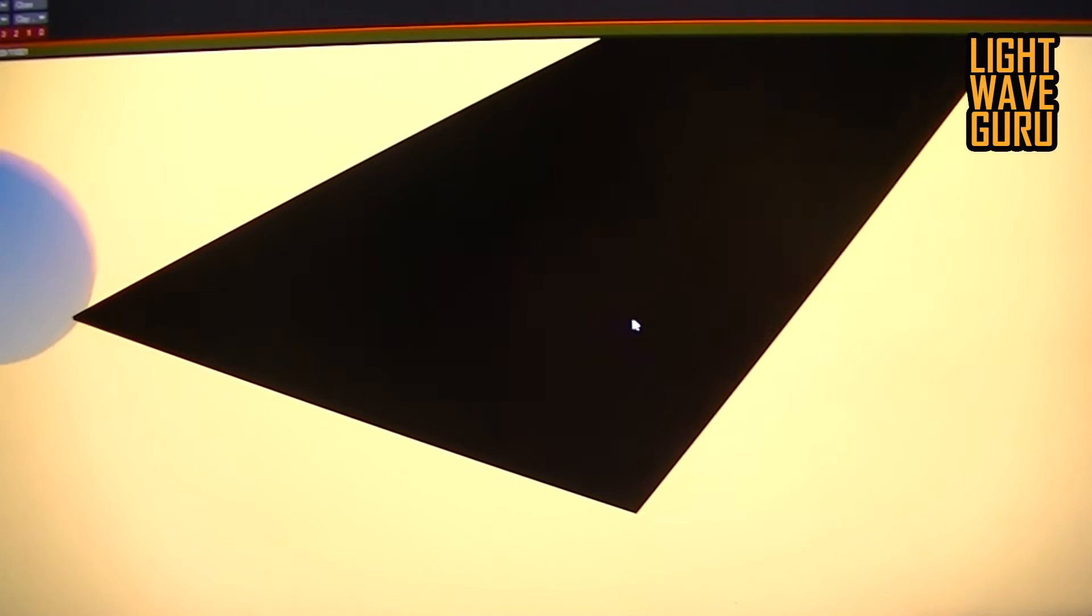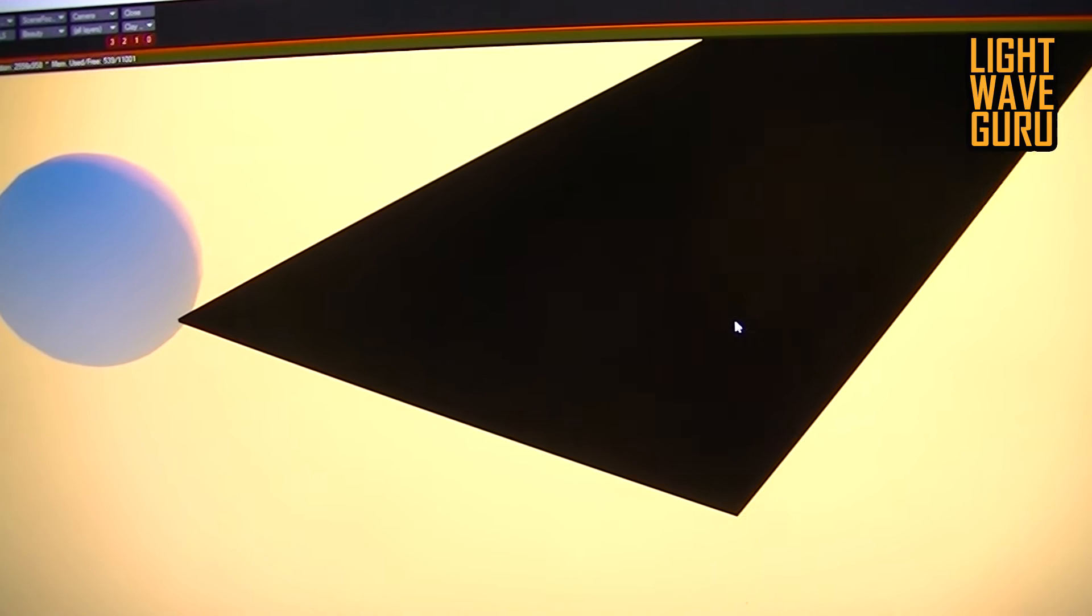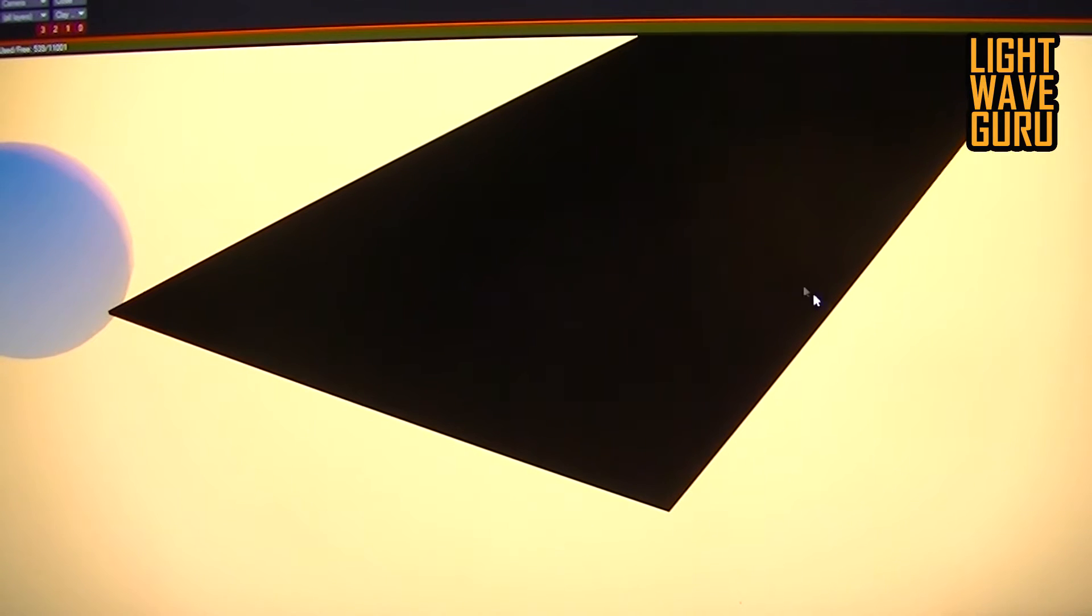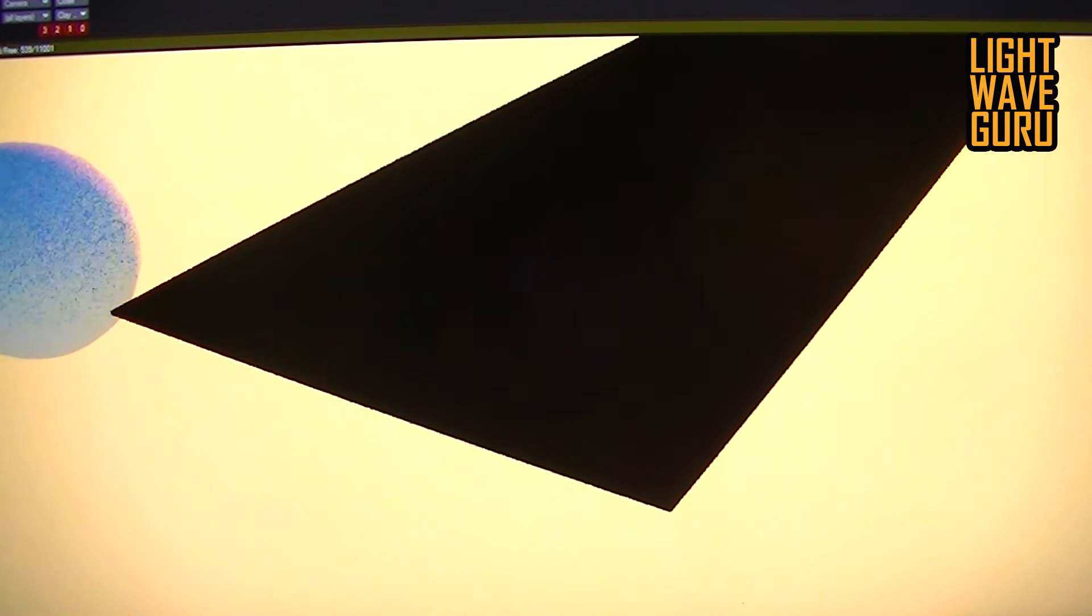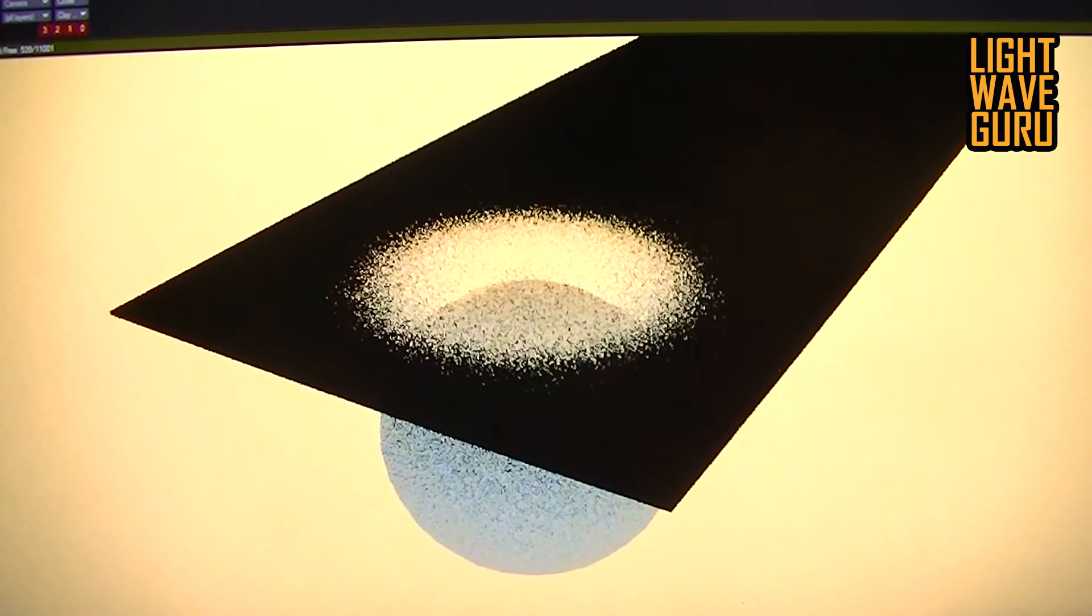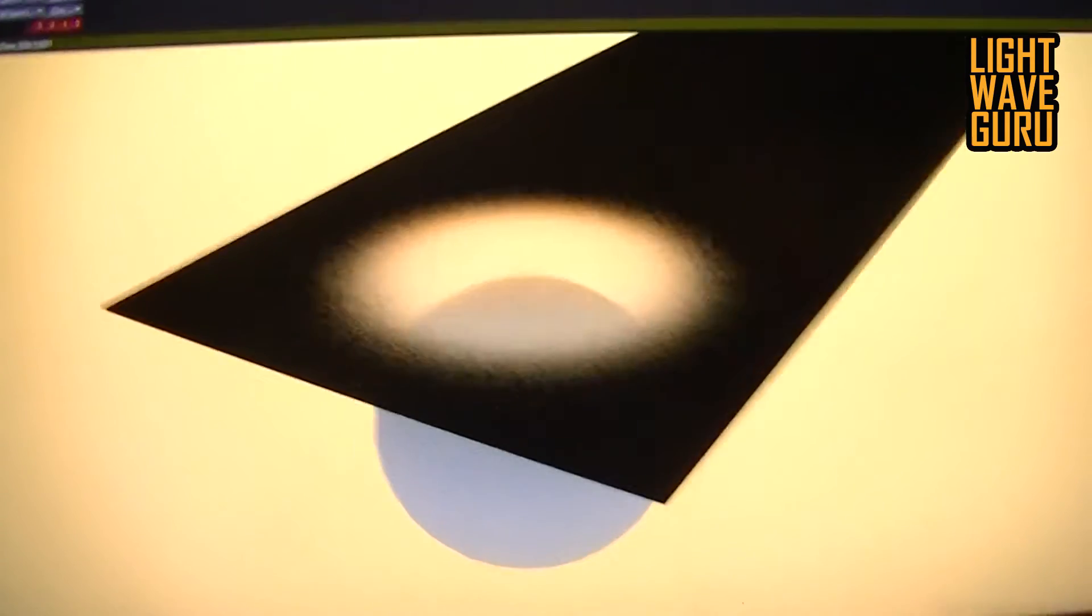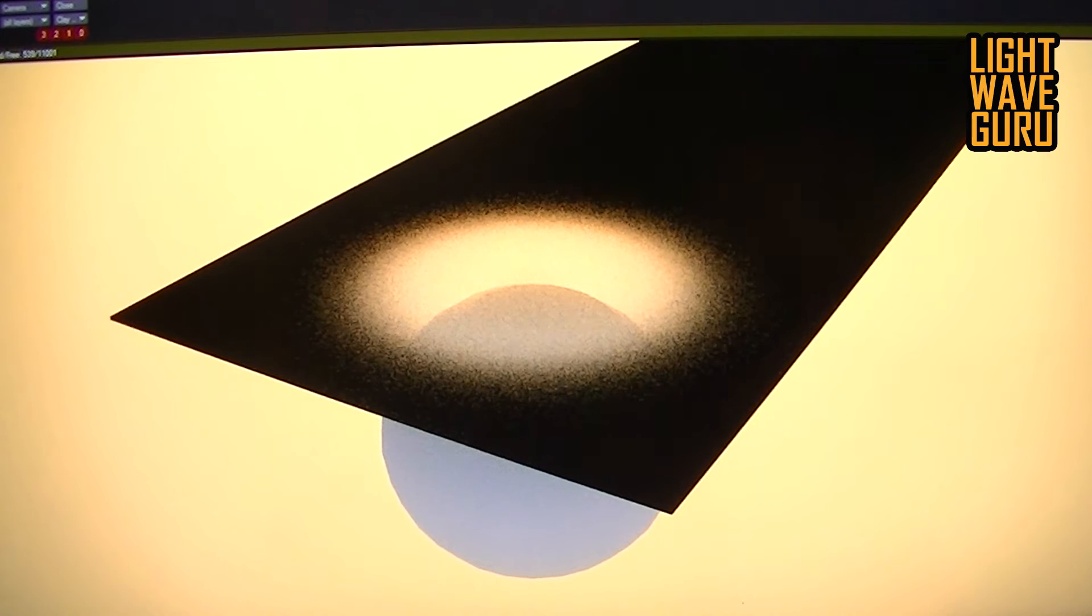And I show you now the way you can see your transparency. You have here your plane, and you see here this ball. And if I move now the ball under the plane, you see what the Dirt node really does.